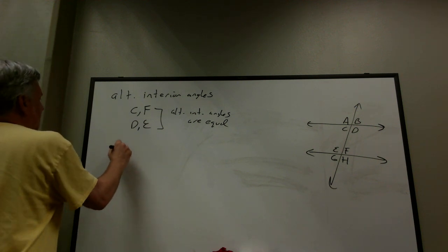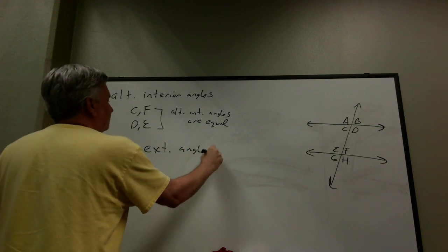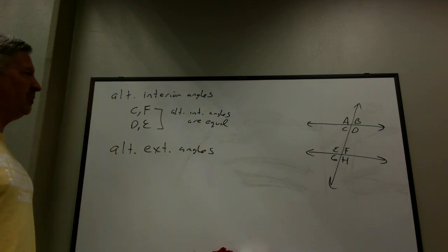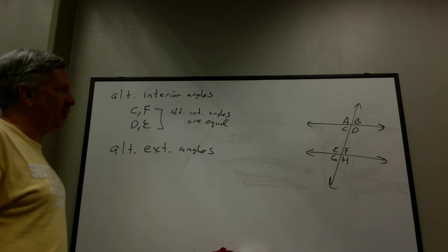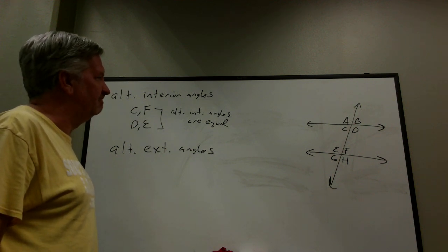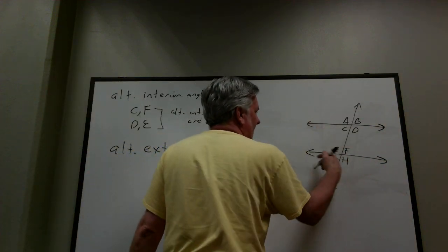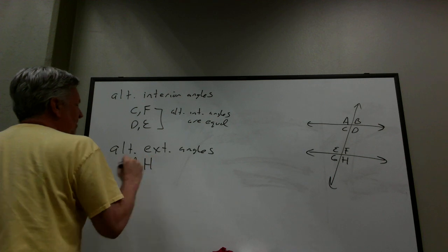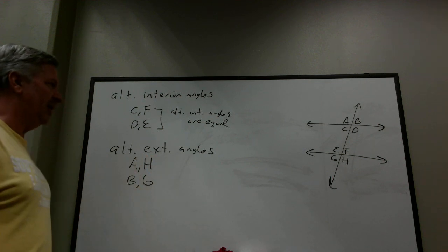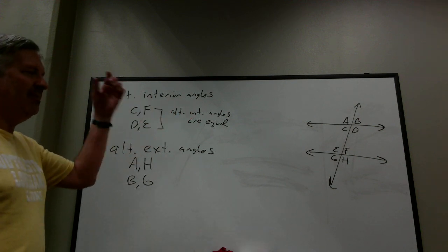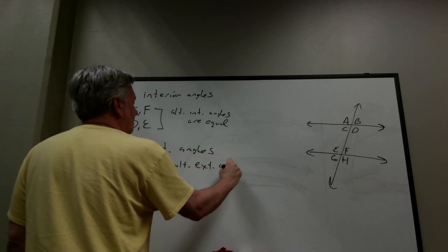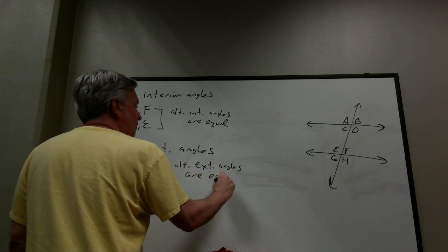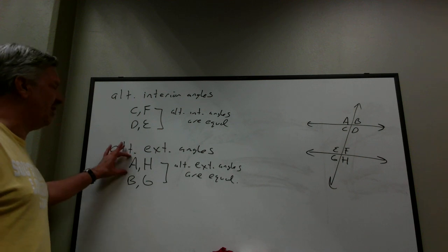The next definition is alternate exterior angles — outside the parallel lines and on opposite sides of the transversal. In the picture, A and H would be a pair, and B and G would be a pair. Just by eyeballing the picture, you can conclude that as pairs, alternate exterior angles are equal.